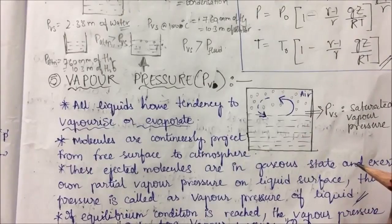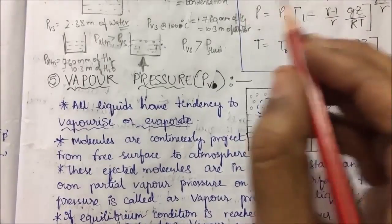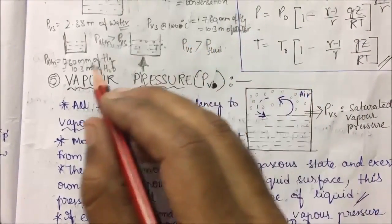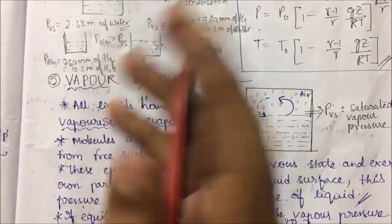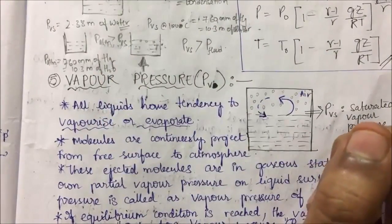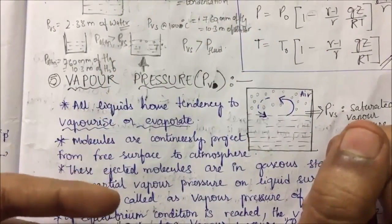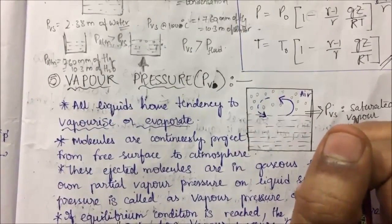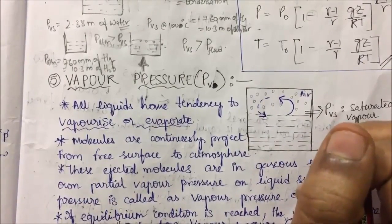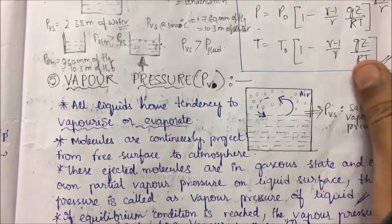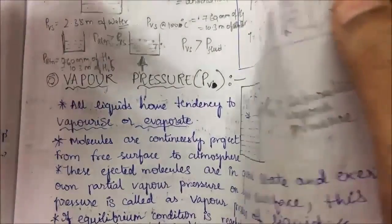When the saturated vapor pressure becomes equal to atmospheric pressure, boiling starts. That is why schools simply say water boils at 100 degrees centigrade. I hope you are clear on what boiling means at the engineering level.